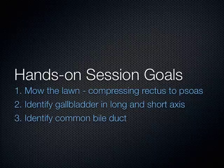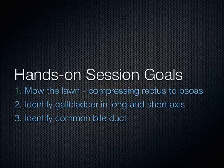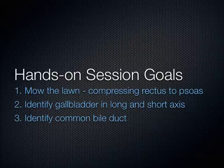Today I want you to really focus on the area where you'd see the appendix. We're not going to mow the entire lawn of the abdomen, but get down to the right lower quadrant, compress in the transverse and sagittal view, and try to see if you can see the psoas muscle coming up and coming in contact with the abdominal wall musculature. Look at the gallbladder in its long and short axis, and then make sure you identify the common bile duct.